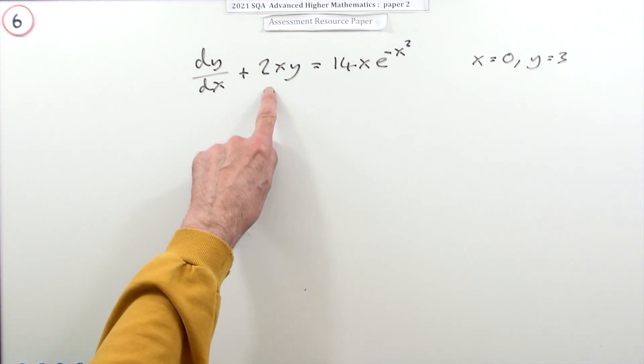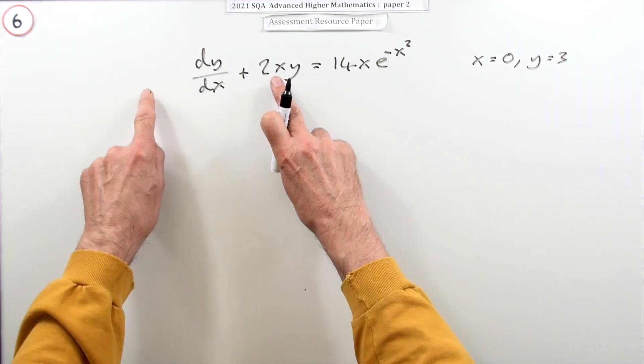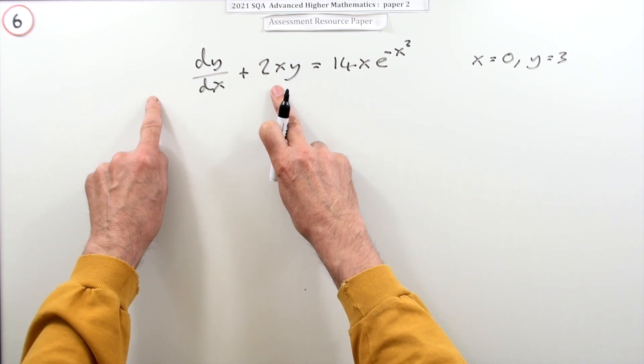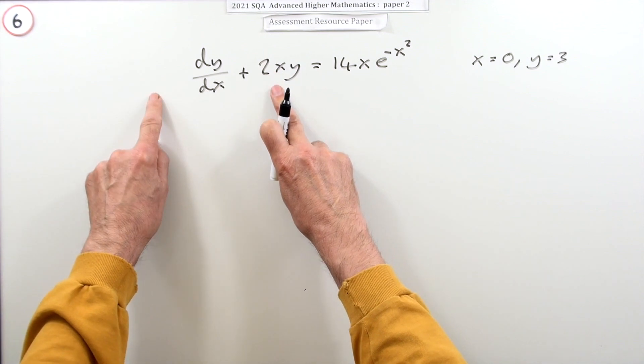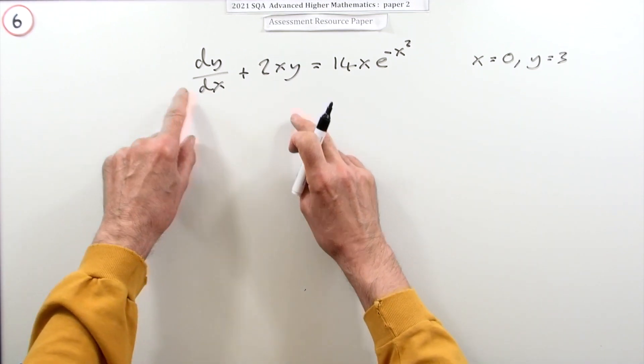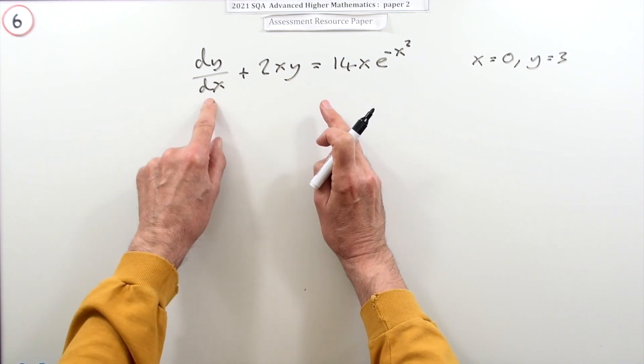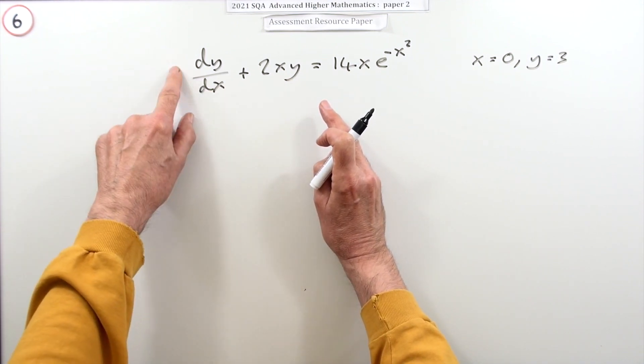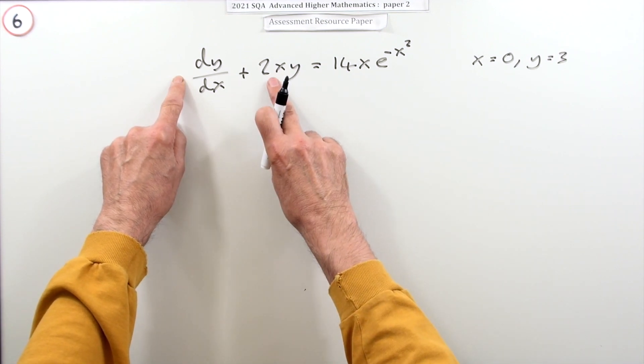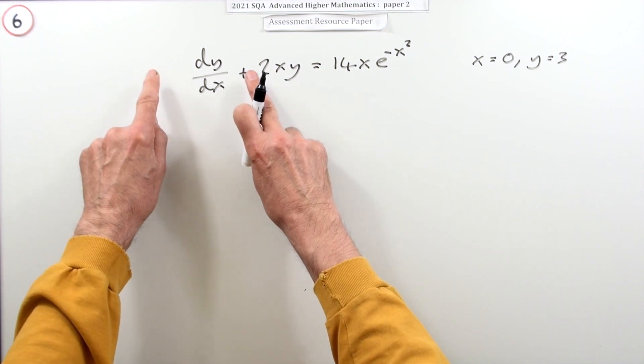What you do here is try to turn this side into the exact form for the differentiation of a product. You're almost there because you've got a y term here and its derivative, so the x function should have been here with its derivative here, but only part of it appeared. You have to find the missing factor that turns that into a proper product.